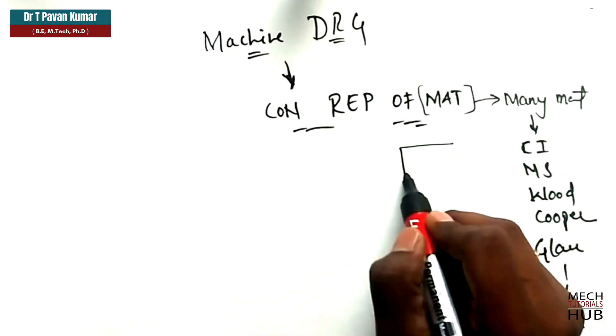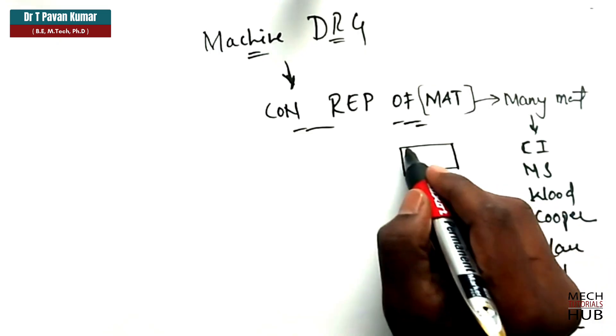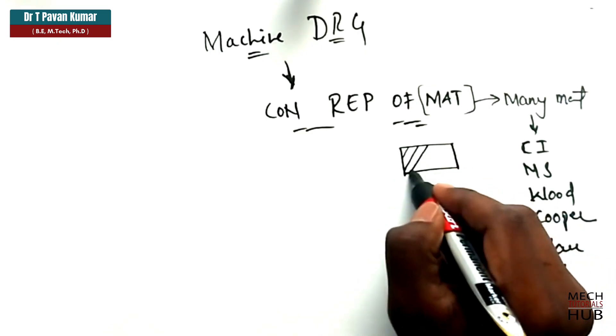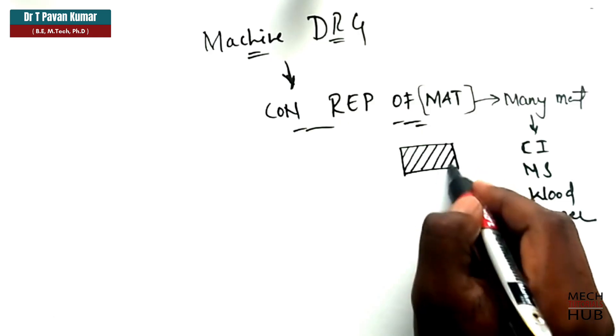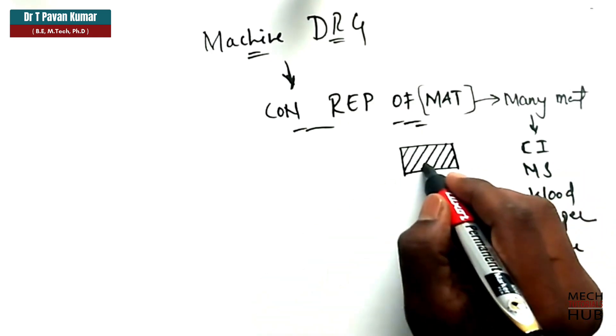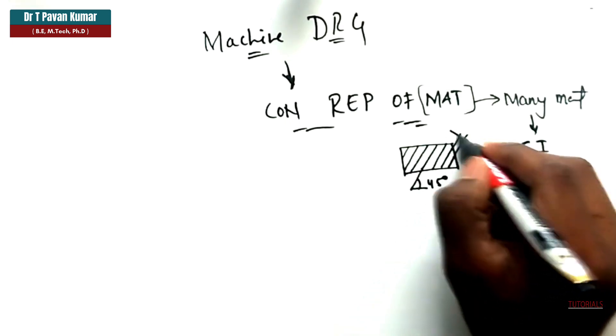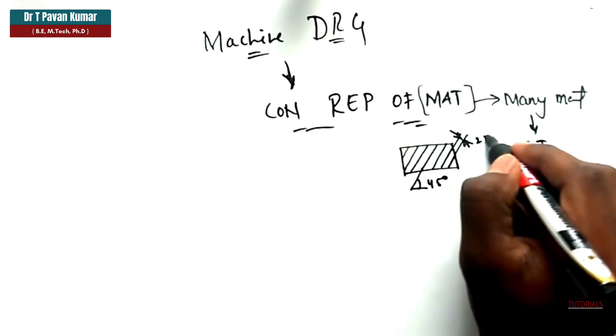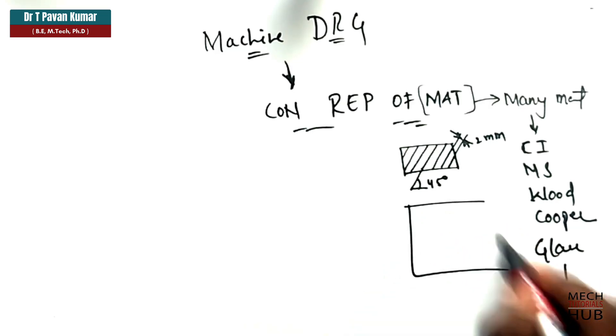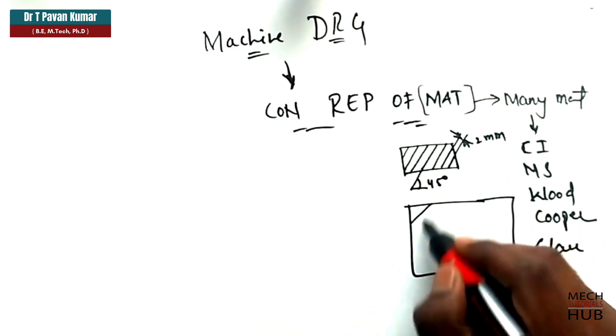So what actually conventional representation here conventionally will try to represent a material with our own specifications. For example, if I want to show a cast iron cutted piece, I'll try to draw a rectangle and I'll try to do hatching like this. You might have seen in your classrooms or in your drawing halls. So why we do this? What actually it means?